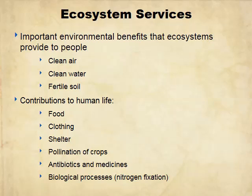We need biodiversity because it provides ecosystem services: clean air, clean water, and fertile soil. Forests take in carbon dioxide — sequestering it for hundreds or thousands of years — and expel oxygen into the atmosphere. Ecosystems filter water for us. Other contributions include food, clothing, shelter, and pollination of crops. Without bees, we wouldn't have our fruits and vegetables. With declining bee populations, we're having big issues pollinating crops. We also get antibiotics, medicines, and biological processes like nitrogen fixation, which we need to grow crops.